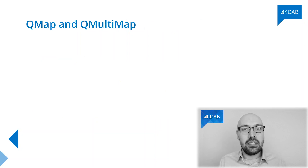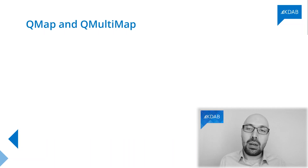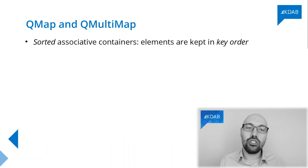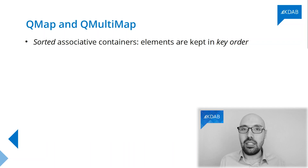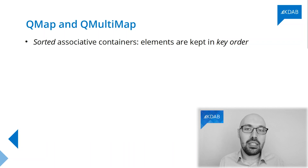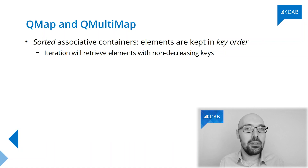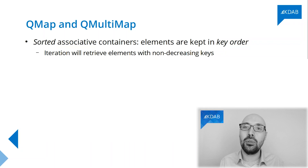Let's discuss the two big families of containers in Qt. The first family is about maps — QMap and QMultiMap. What they have in common is that they are both sorted associative containers, meaning the key-value pairs inside a map or a multimap are kept sorted in key order. So if you iterate over a QMap, you will see all your keys appearing in key order.